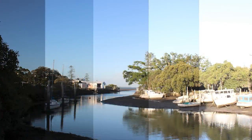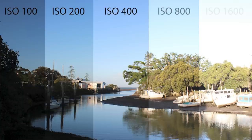Now if we place the images side by side, it's clear to see the difference in the exposure. Remember, with ISO, as the number doubles, so does the light. A doubling of light is an increase of one stop. And likewise, if we go down with the ISO, every step is a decrease of one stop, or a halving of light.